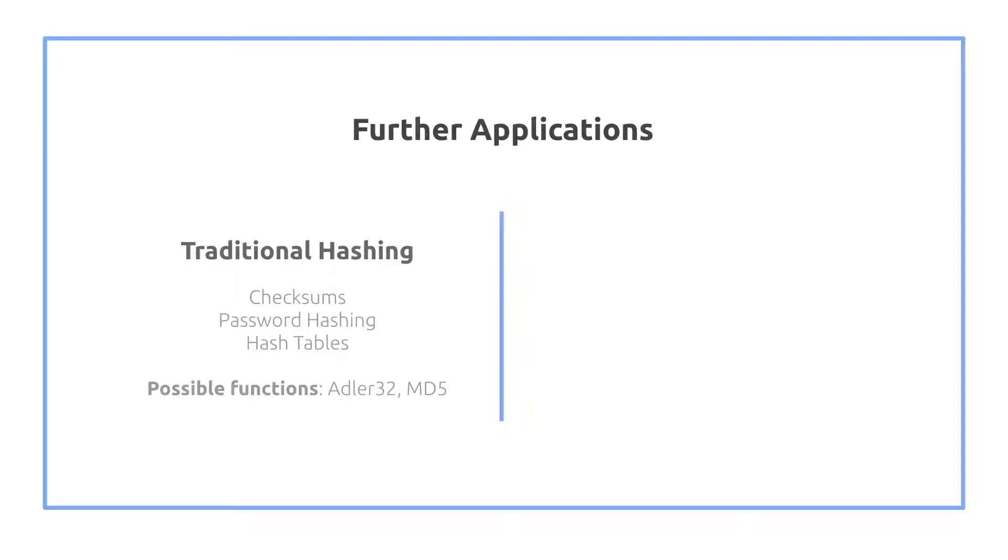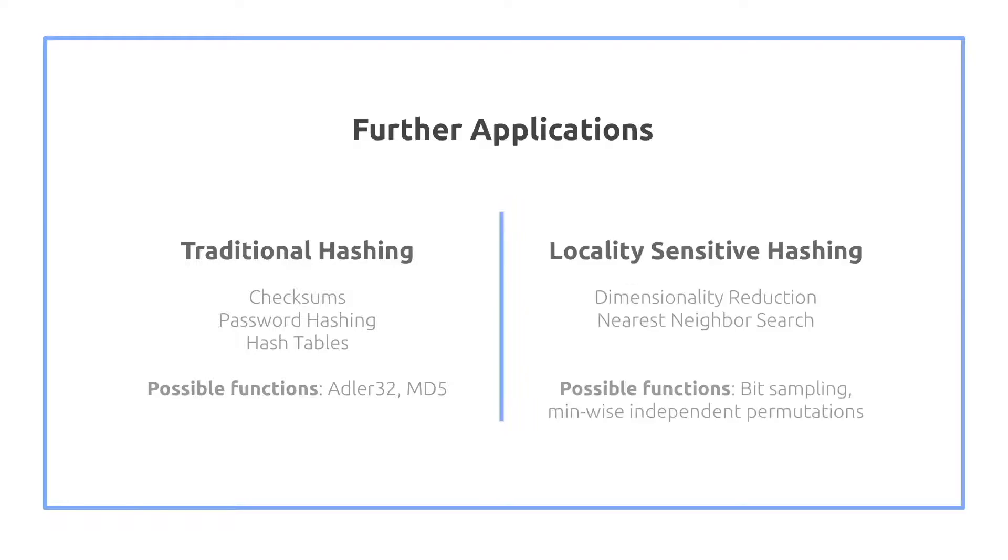Similarly for hash tables as well. Some other possible functions include Adler32 and MD5. For locality-sensitive hashing, it may be used for dimensionality reduction. It can also be used for nearest neighbor search. I made a dedicated video just on nearest neighbor search and min hashing as well. Some possible functions include bit sampling and minwise independent permutations.